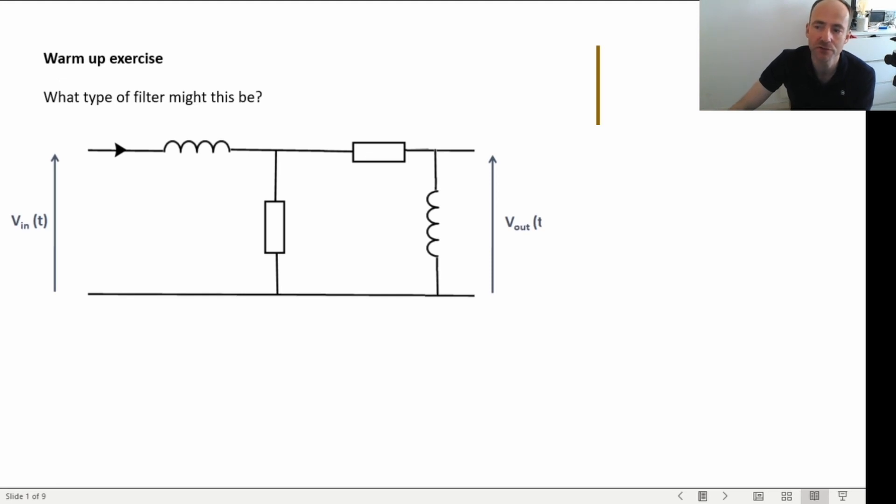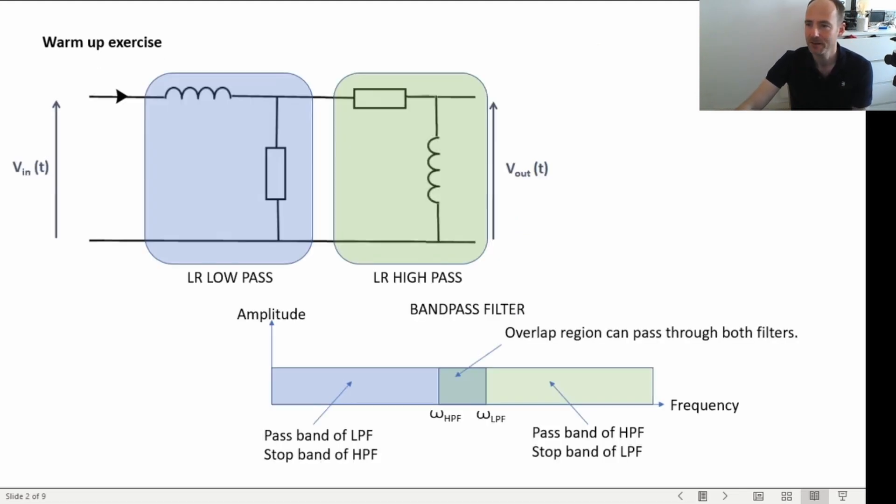And there's a question here for you to think about on the first slide. Okay, so let's go and move on to this and let's have a quick look. So here, basically, I've got the circuit and I've just highlighted that there's actually two filters there. You can see they're both RL filters. And if you look at the one in the blue box, it's configured as a low-pass filter.